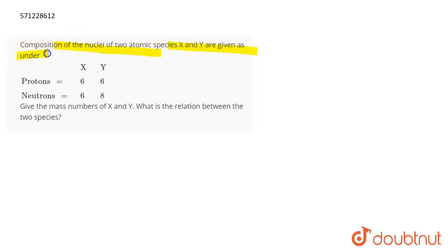You're given two species X and Y, and the number of protons and neutrons are given to you. You have to calculate the mass numbers of X and Y and you have to tell the relationship between these two species.